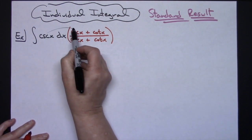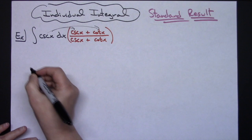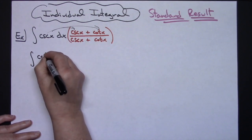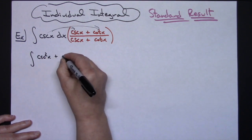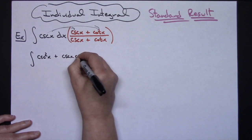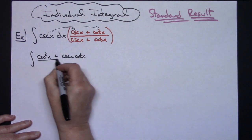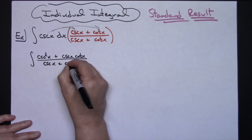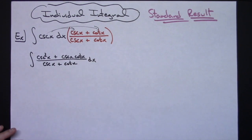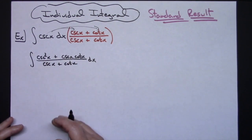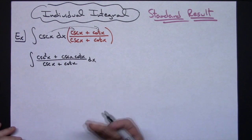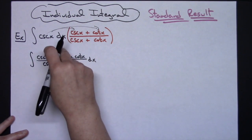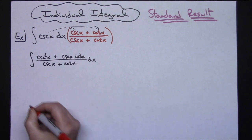I'm going to take this cosecant and distribute on the top. So then I'm going to have the integral of cosecant squared x plus cosecant x cotangent x, all over cosecant x plus cotangent x dx. At this point you can see how we're going to use a u substitution, with that denominator being really close to that numerator.